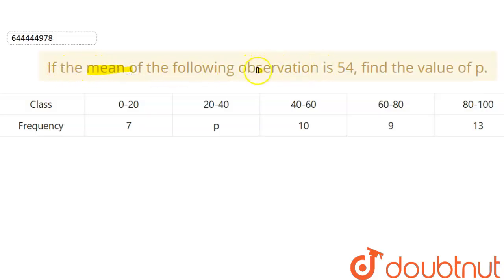The question says if the mean of the following observations is 54, we have to find the value of p. So we are given the class interval, we are given frequency, and here is our p.